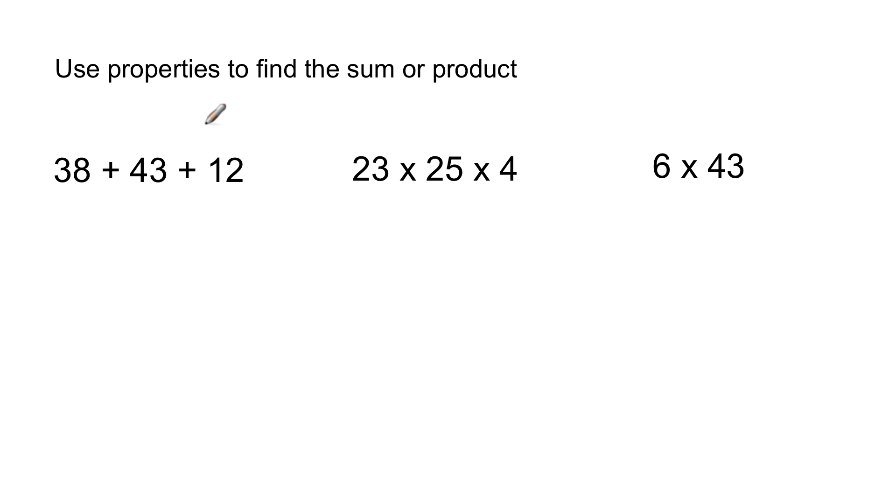And through the use of properties, I can group up or add in a different order that would make it much easier for me. The properties say I can add these things in a different order or I can group them up differently. So in this case, I want to add in a different order because 38 is a more compatible number with 12. And they're compatible because when you add the numbers on the end in the ones place, they make a nice round number. They make a 10. 8 plus 2 makes a 10.